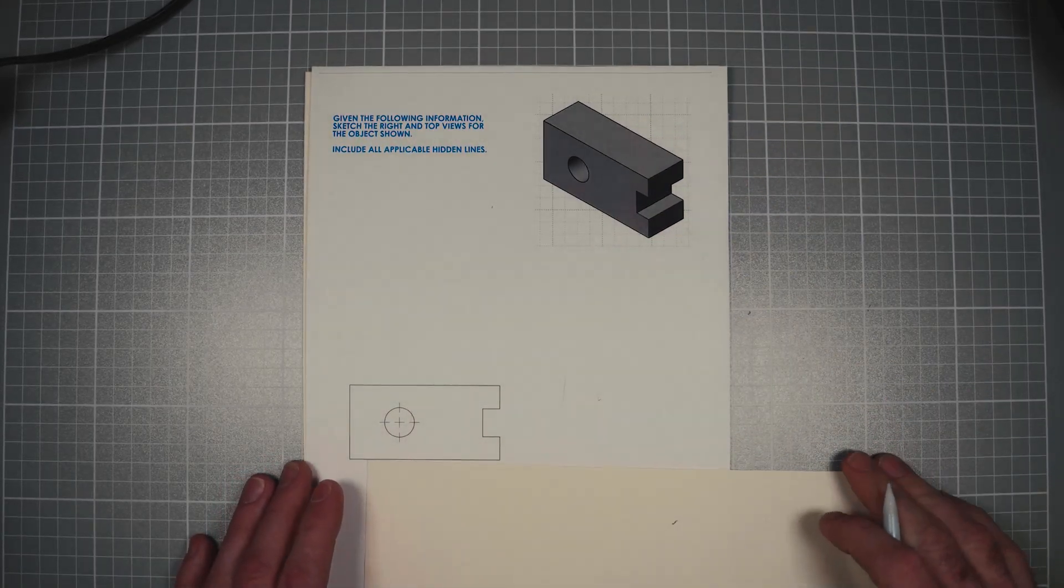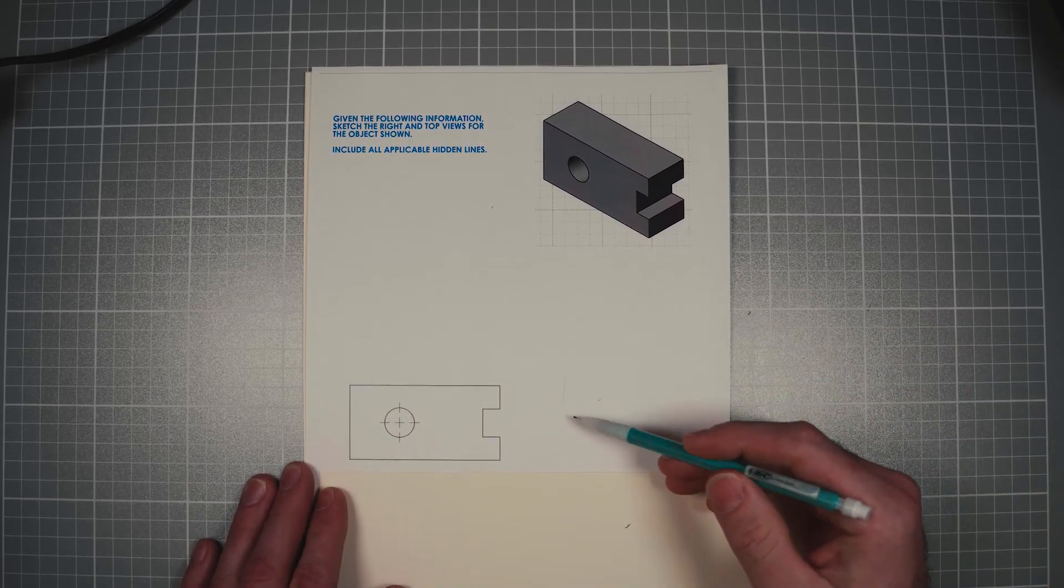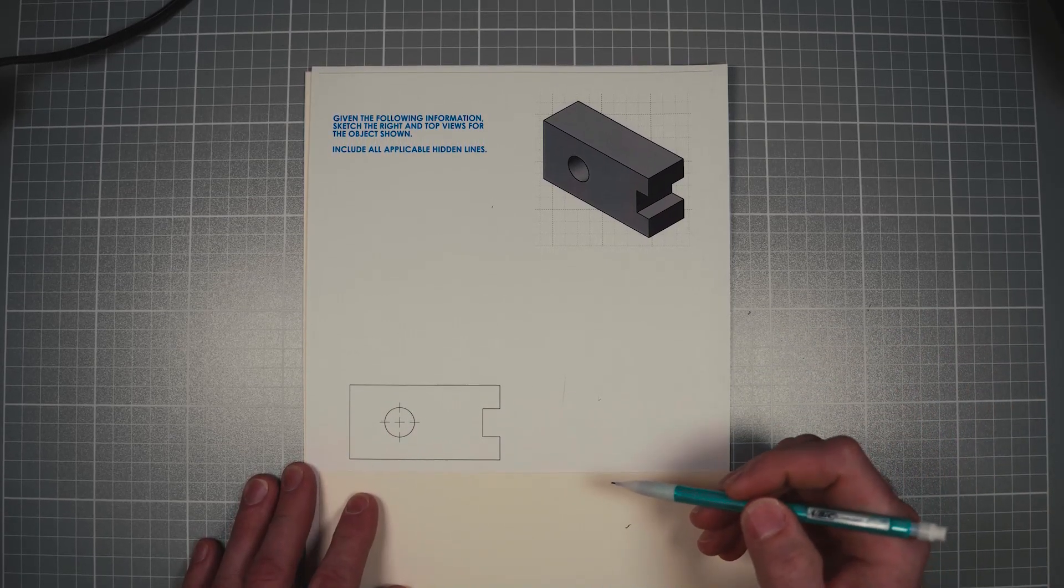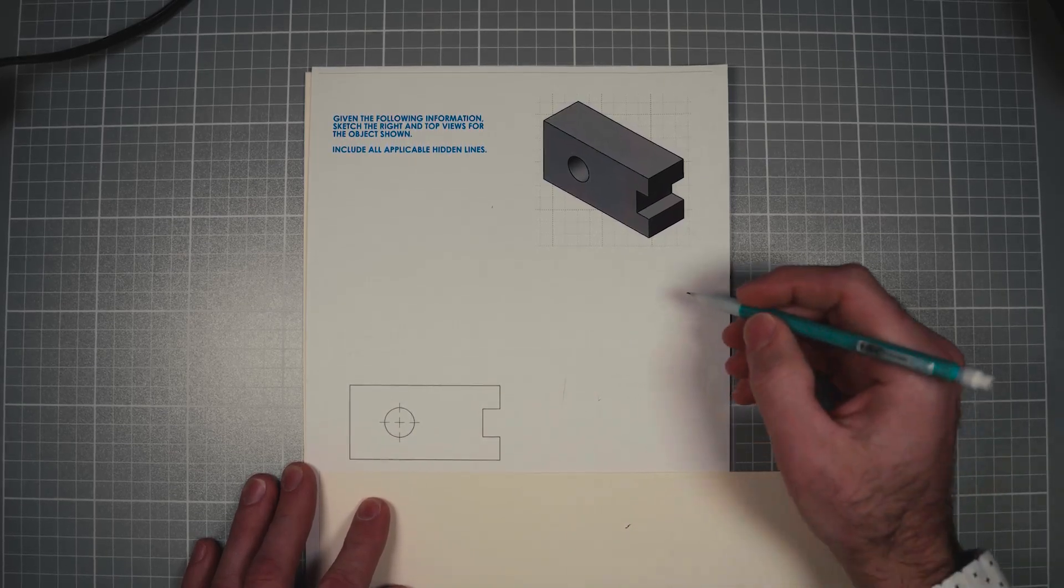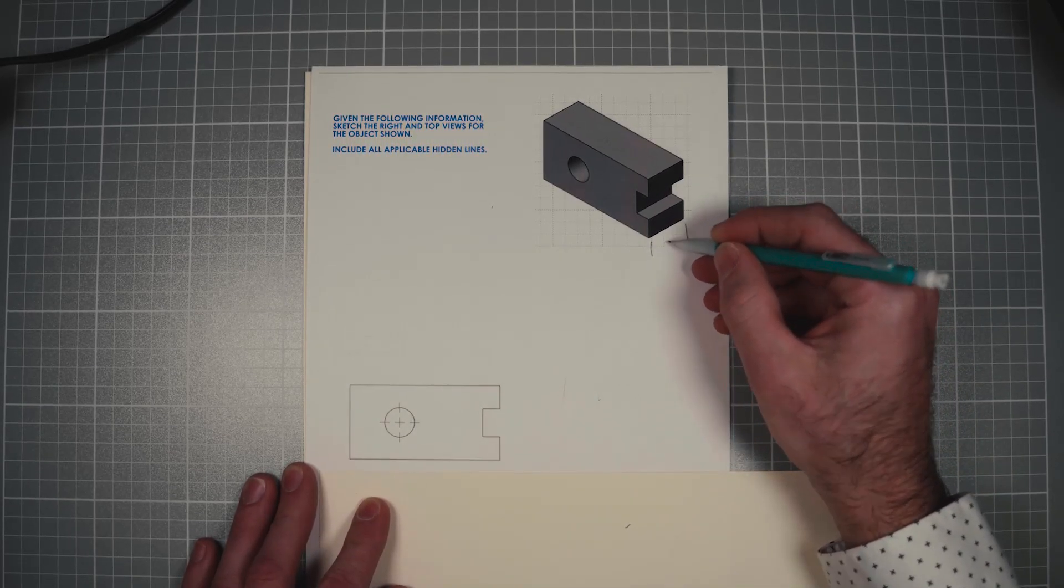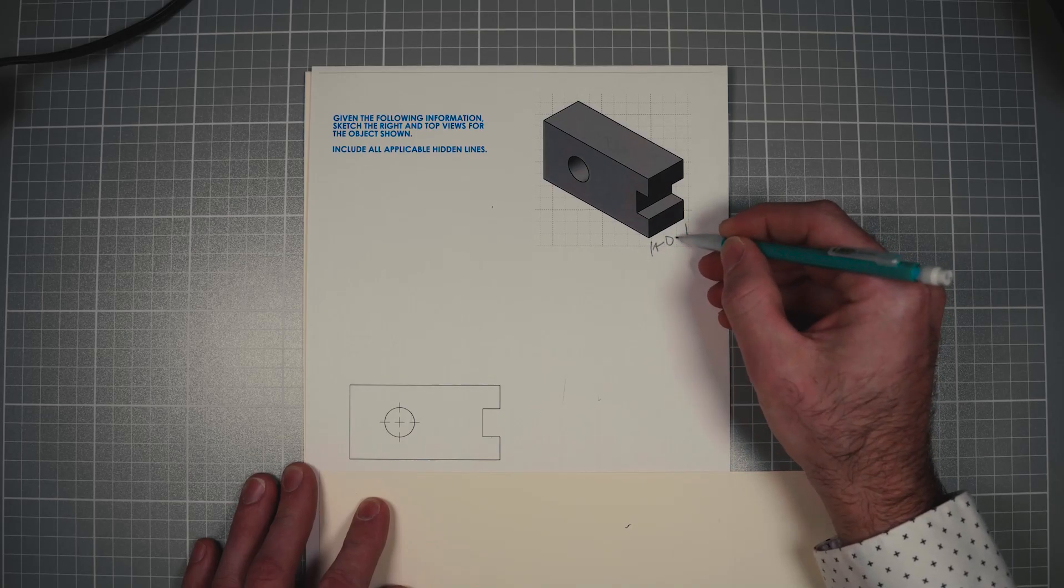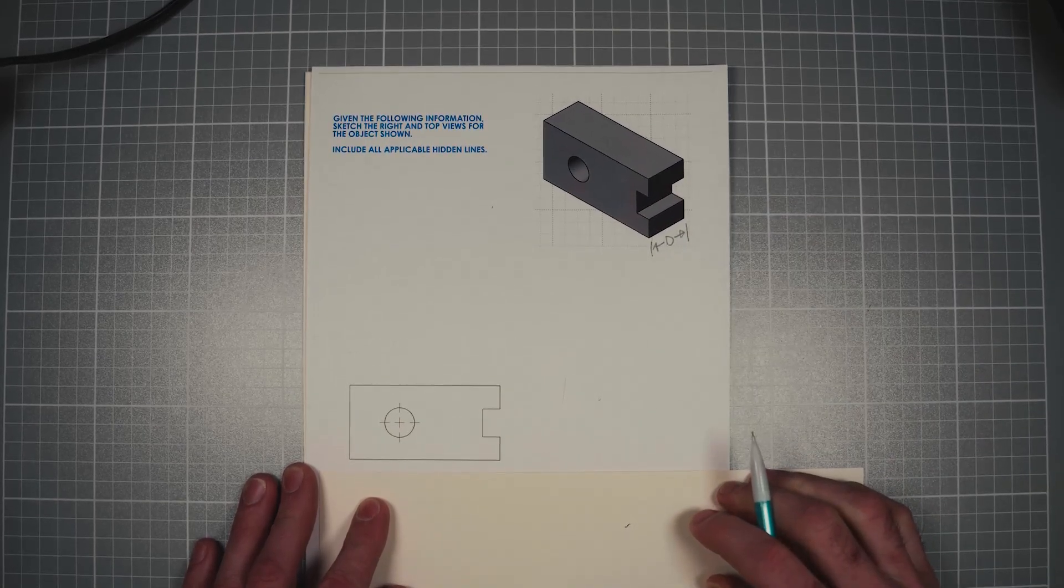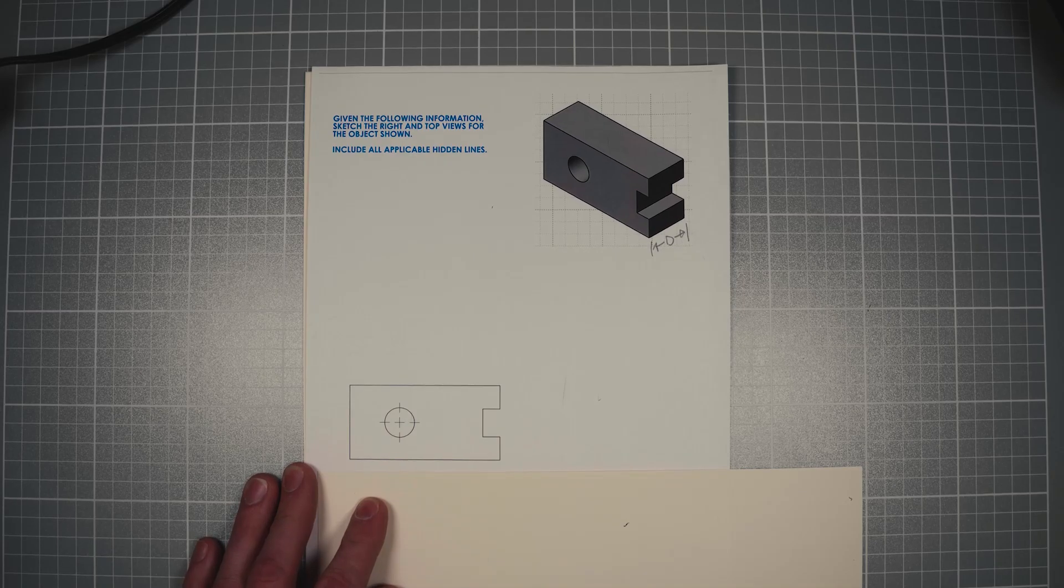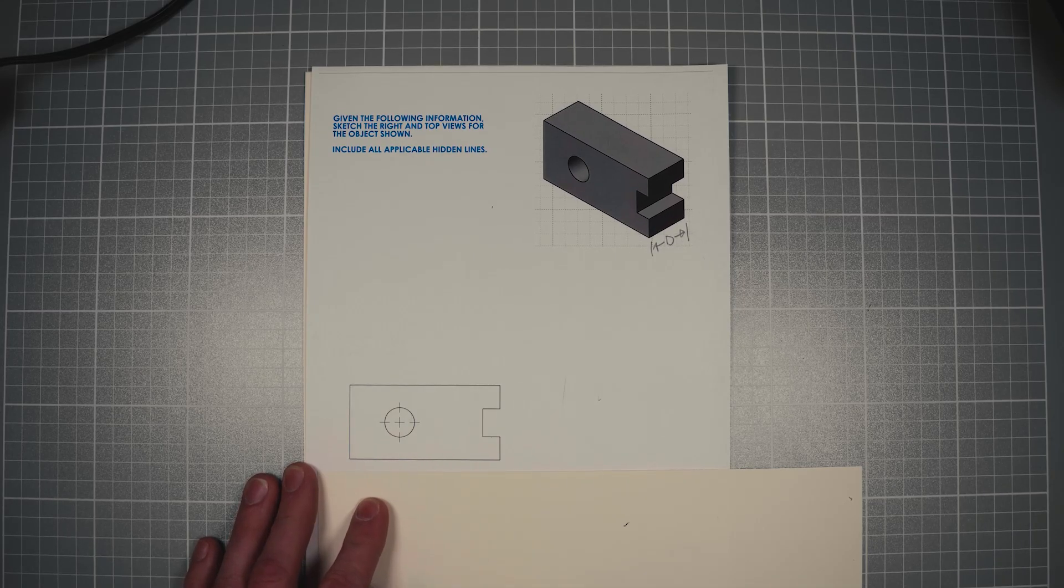Now the first thing we're gonna do is the right view. Now we've got all the information we need minus this distance. This is gonna be the depth of the part. We're just gonna guess. Sometimes you just have to guess with this stuff, especially if you're just sketching.